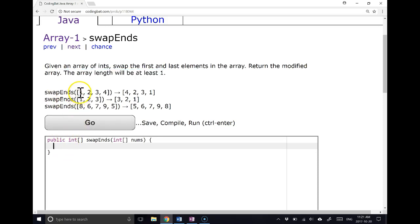So if we look at our example, this is the array that's passed in: 1, 2, 3, 4. And the array that's passed out is 4, 2, 3, 1. So notice we just switched the first and last element. The second example, 1, 2, 3 is passed in. And what's returned is 3, 2, 1. The first and last element are switched.